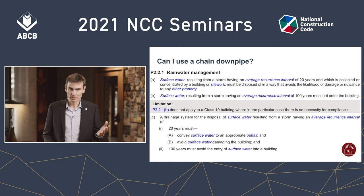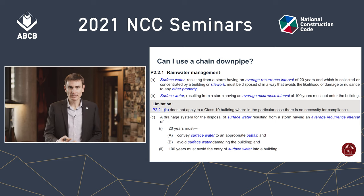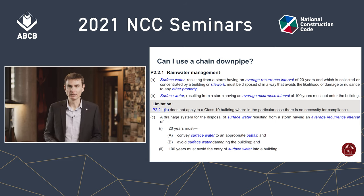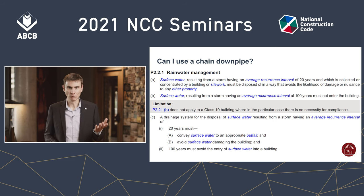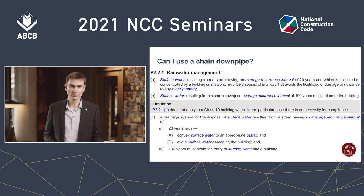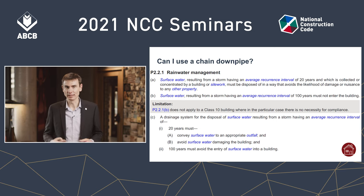The relevant performance requirement is P221 in Volume Two, and it's the same for Volume One as well. Nothing here prevents a chain downpipe so long as the system takes the rainwater from a one-in-20-year ARI storm to an outfall and keeps it out of the building.